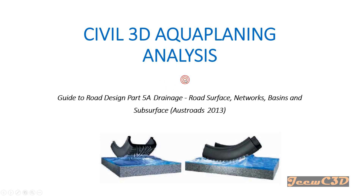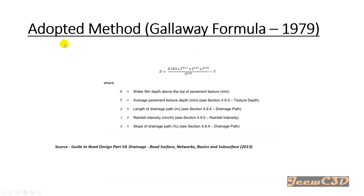This phenomenon is called aqua planning. In the Australian guideline there is an equation adopted to calculate the aqua planning effect — it is called the Galloway formula, derived in 1979. It gives you the water film depth in millimeters. The parameters are: average pavement texture depth (from a table), length of drainage path, rainfall intensity of that area, and slope of the drainage path.